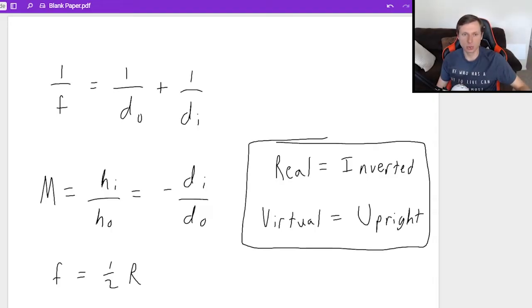One over F equals one over DO plus one over DI, where F is the focal length, DO is the object distance, and DI is the image distance. Usually you solve for DI, the image distance, but not always.